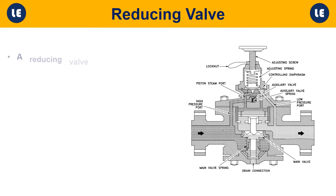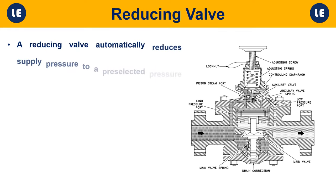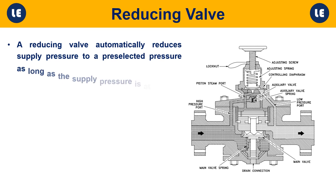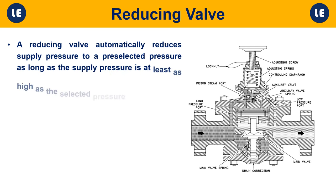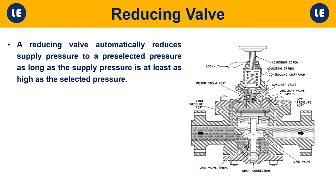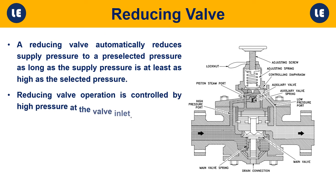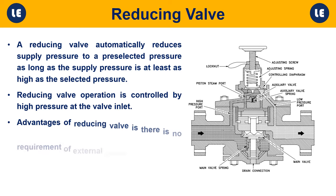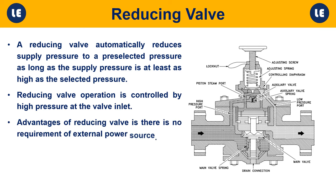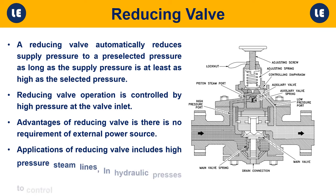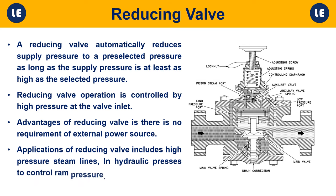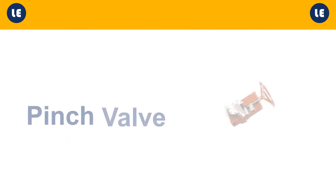Reducing valve: A reducing valve automatically reduces supply pressure to a preselected pressure, as long as the supply pressure is at least as high as the selected pressure. Its operation is controlled by high pressure at the valve inlet. An advantage is that there is no requirement for an external power source. Applications include high-pressure steam lines and hydraulic presses to control ram pressure.